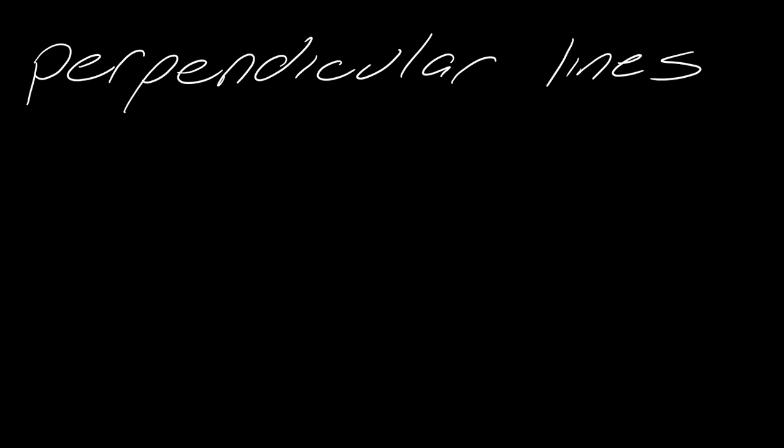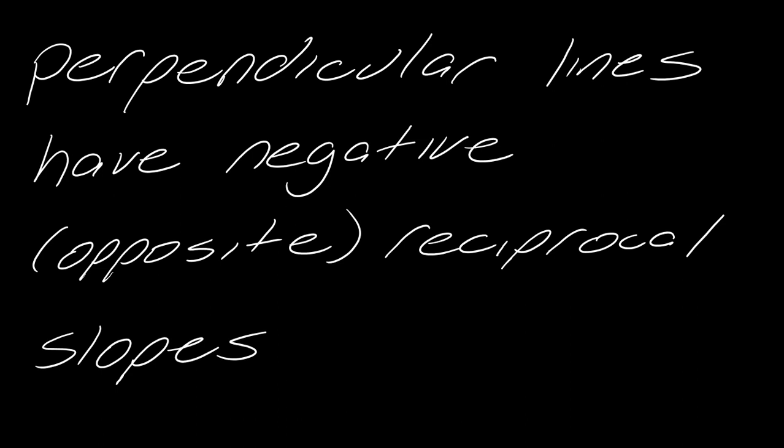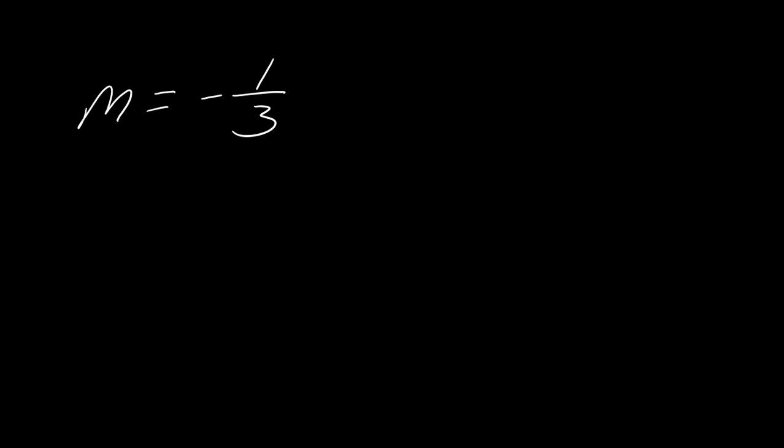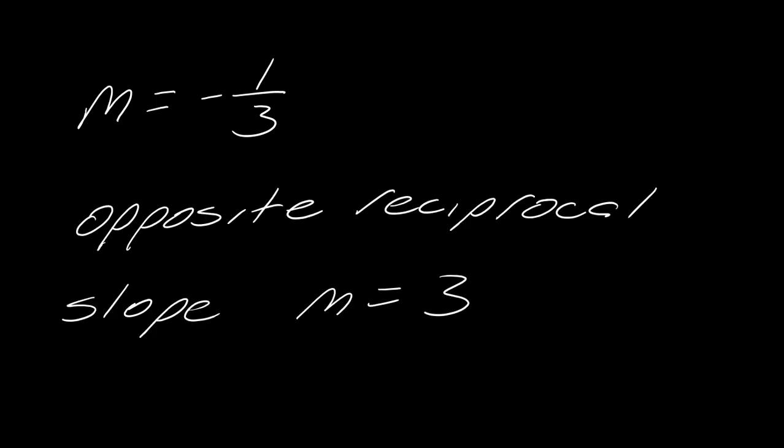Okay, now let's talk about perpendicular lines for a second. What makes two lines perpendicular? Perpendicular lines have negative or opposite reciprocal slopes. So if you forgot what that means, let's pretend I have the slope m equals one third. Then the opposite reciprocal slope would be m equals positive three. So notice it's both a reciprocal and it has the opposite sign. That's what I mean by opposite.